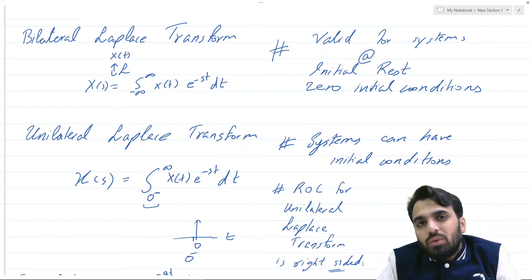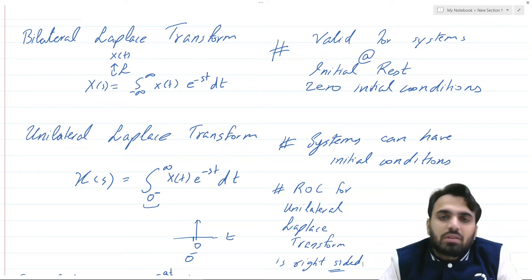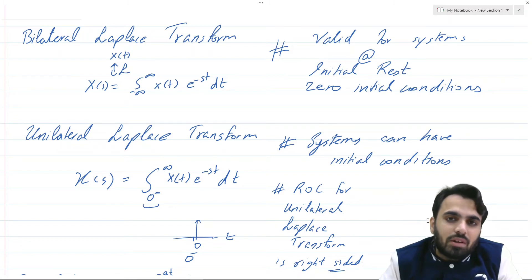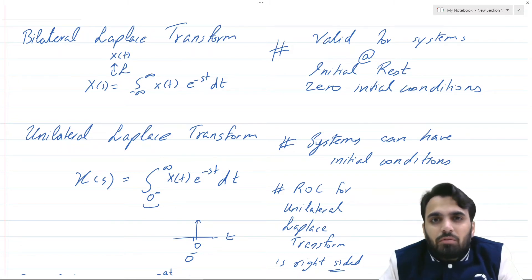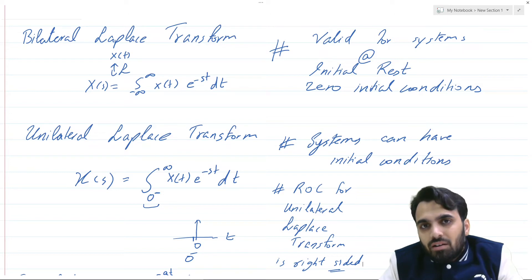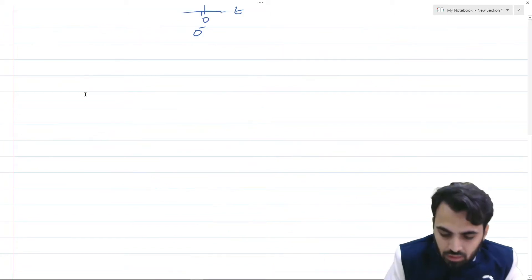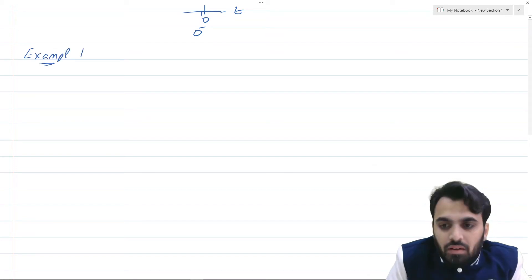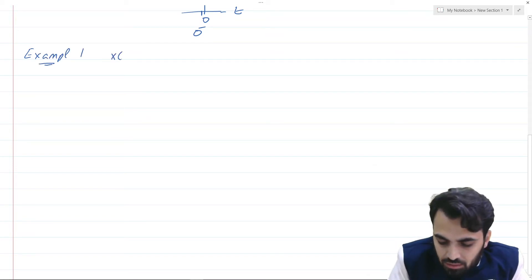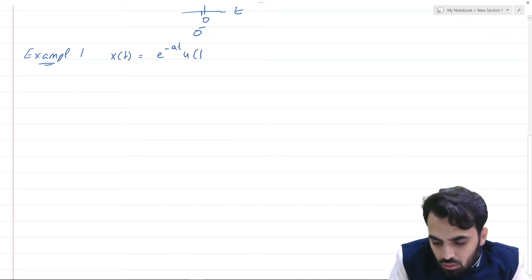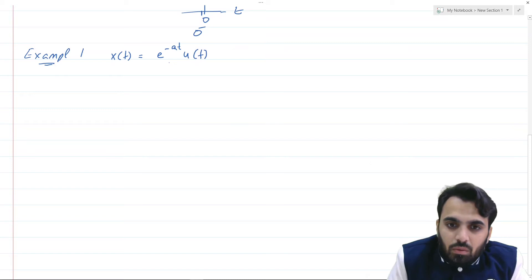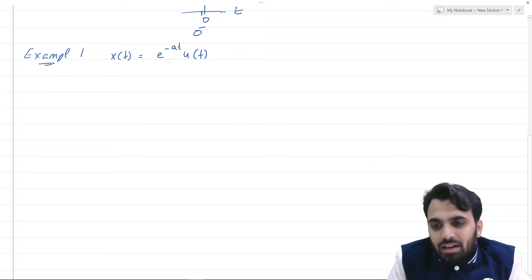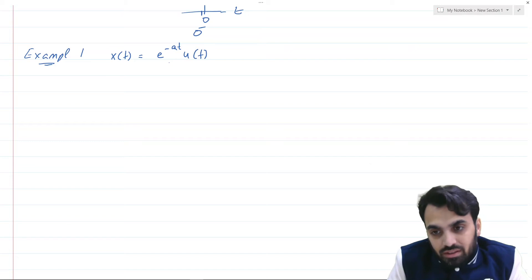Let us work through a few examples to see how the unilateral Laplace transform differs from the bilateral Laplace transform. In the first example, we are given the signal x(t) = e^(-at) u(t), and we are asked to find both the unilateral and bilateral Laplace transforms of this signal.